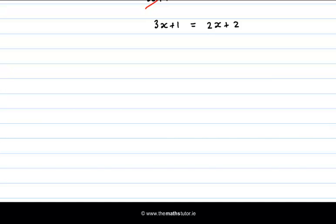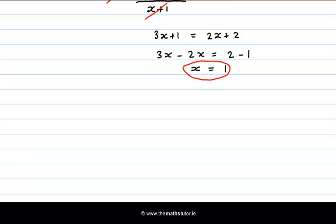If we bring the x's to one side and the numbers to the other, we get 3x minus 2x is equal to 2 minus 1. So that is that x is equal to 1. This is one solution to the modulus equation that we were given at the start.